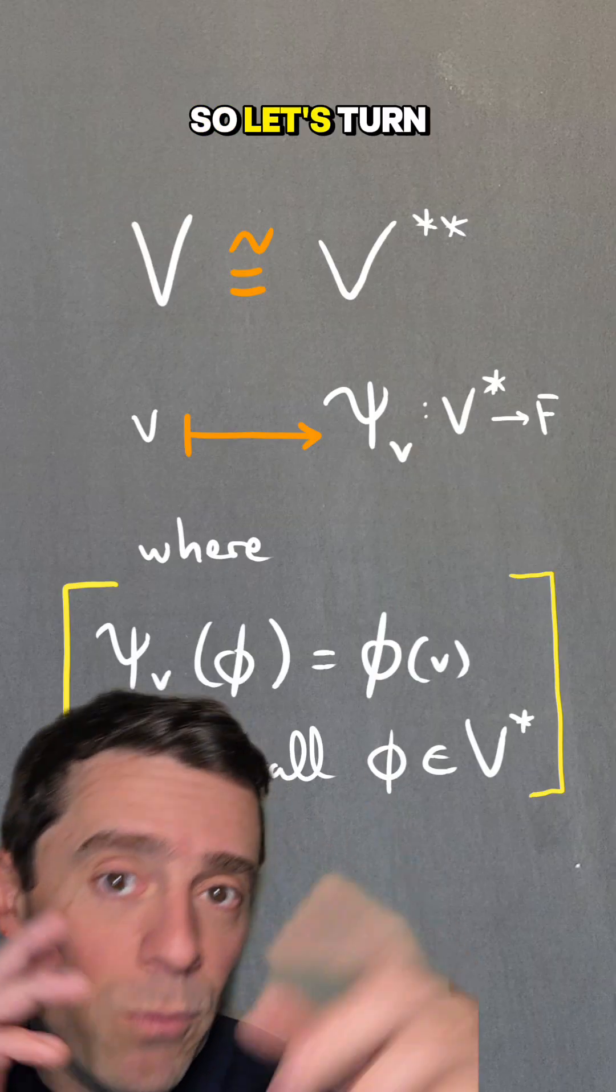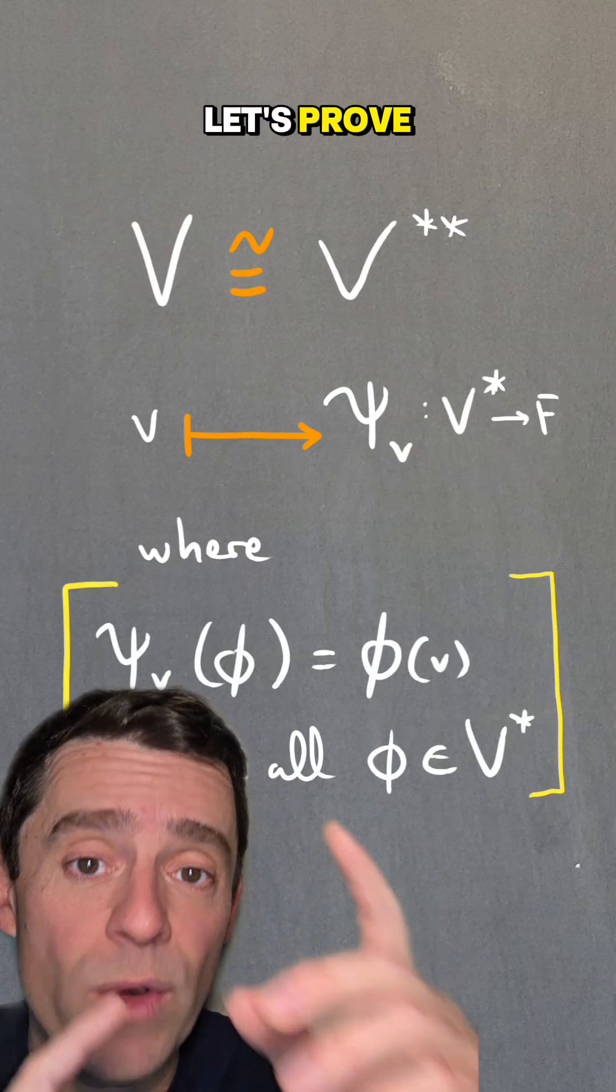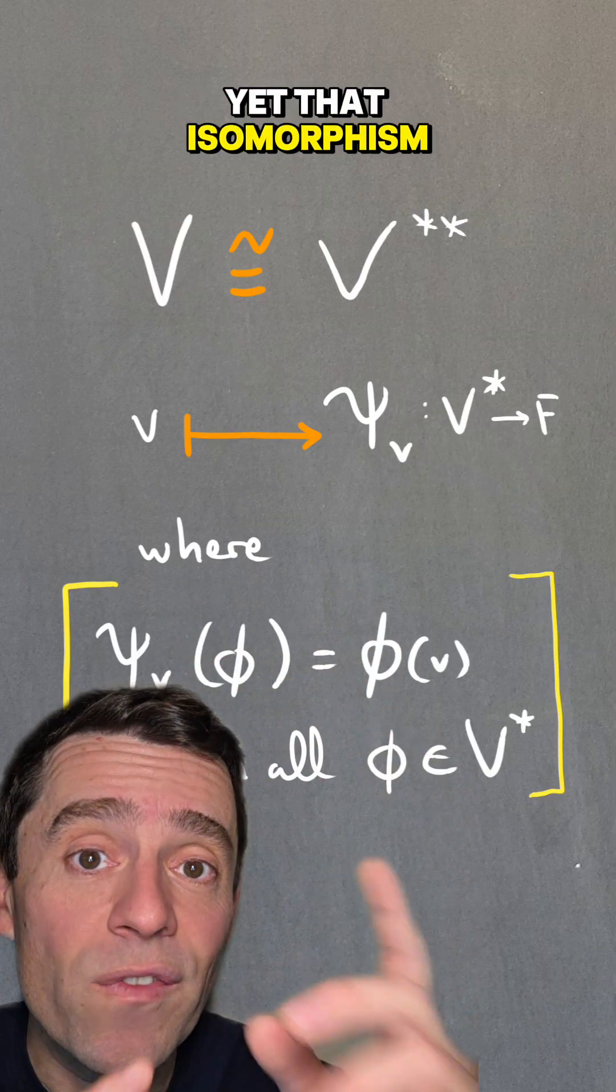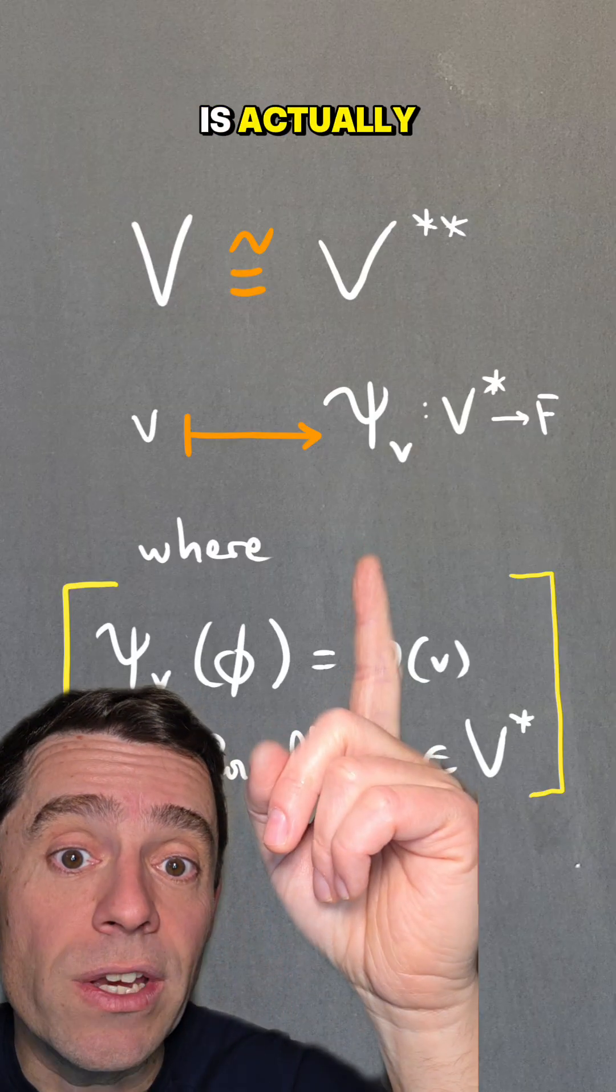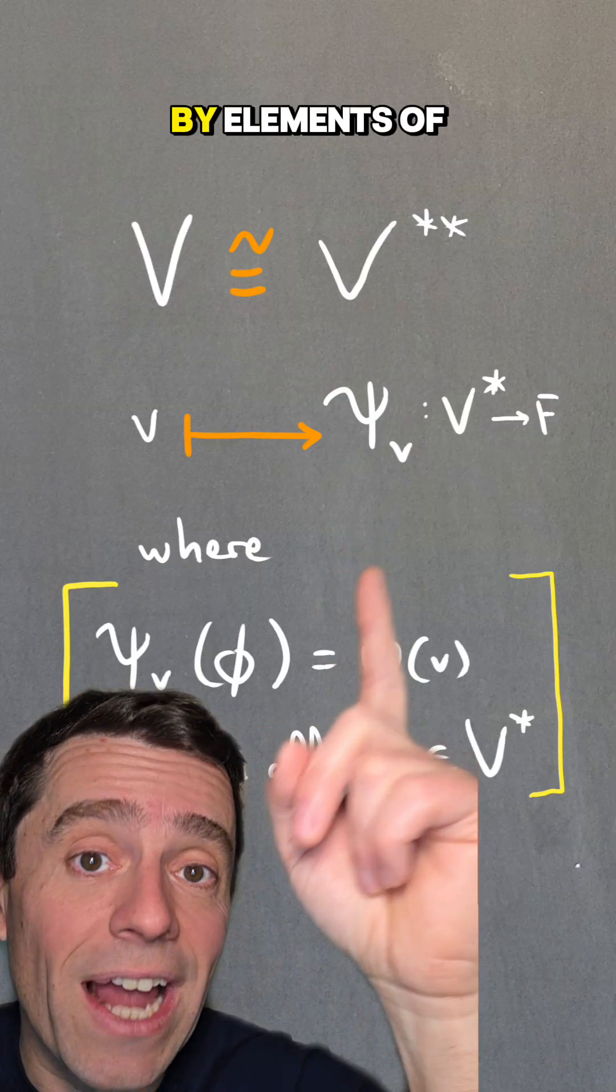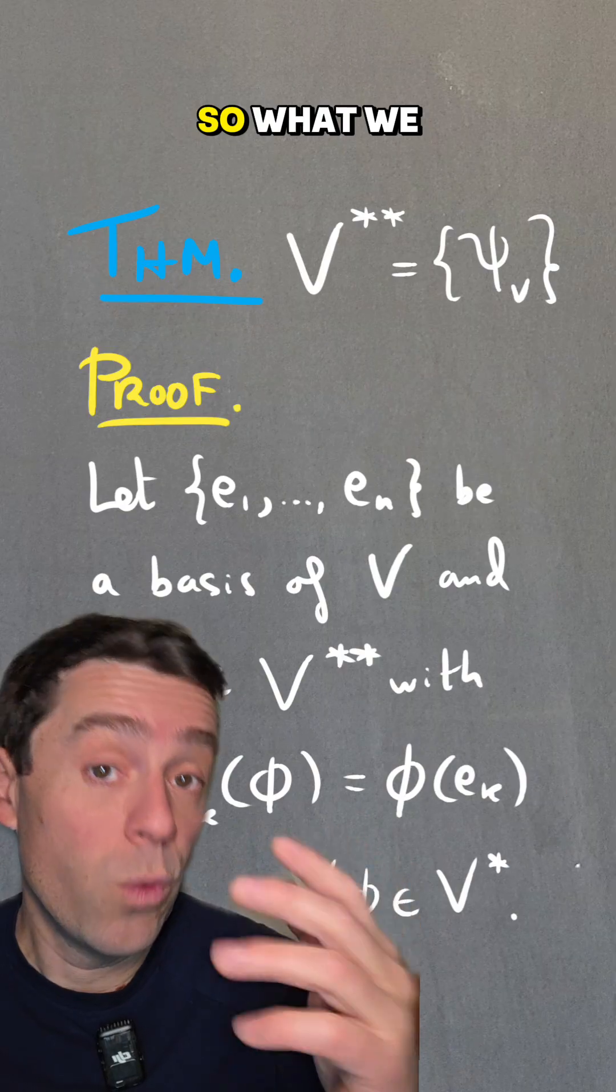So let's turn this around and prove, without having proved yet that isomorphism, that the double dual is actually formed by elements of that shape.